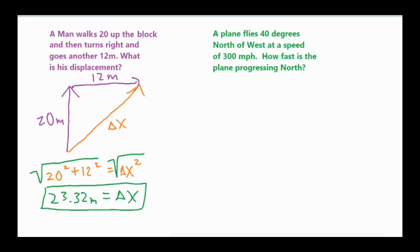After using the Pythagorean theorem, we squared our two sides, summed them up, and took the square root of both sides. We got a final displacement of 23.32 meters, which is larger than either of the sides. Since we're finding the hypotenuse of a triangle, it makes sense that it's larger than any of the two sides that create that right triangle.